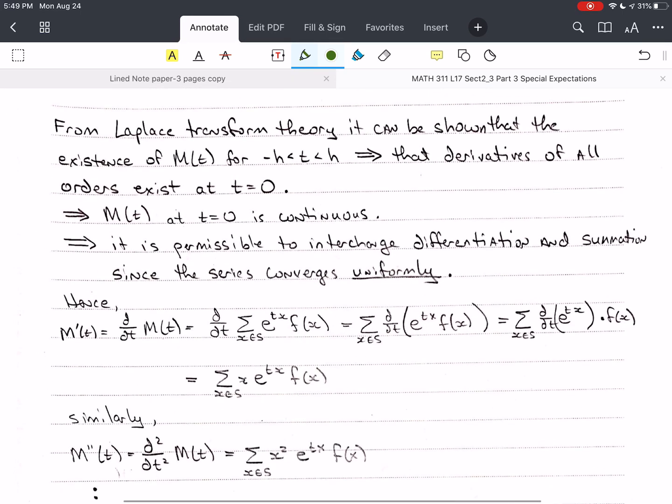From Laplace transform theory, really simple stuff, right? It can be shown that the existence of m of t for t between negative h and positive h implies